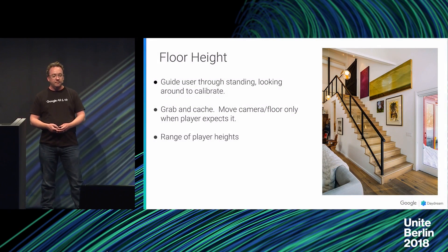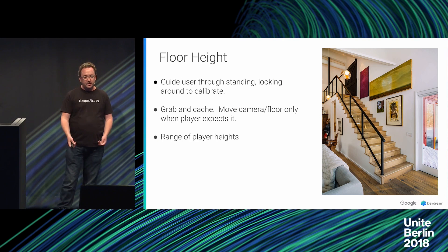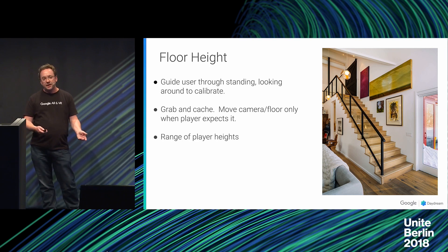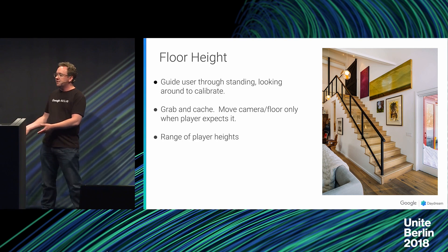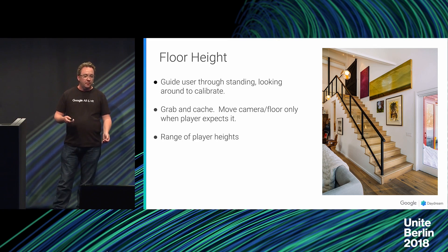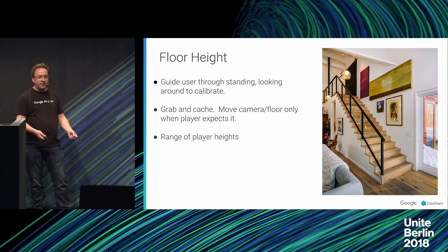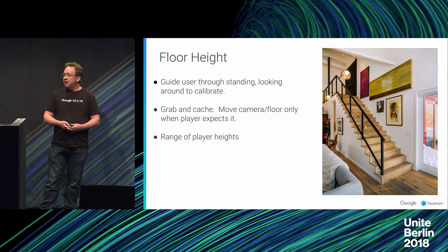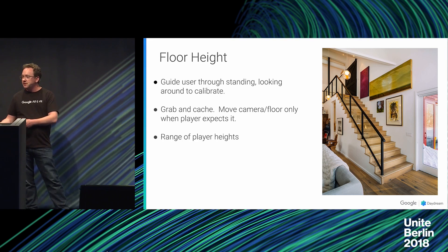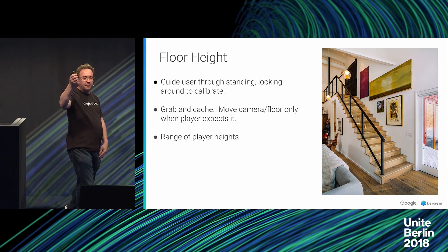If your game uses floor height, it's recommended that you guide users through a brief calibration exercise — first informing the user about the need to know the floor height, then guiding them to stand and look around their environment so the device can get to know it. Apply floor height at known points when the user might expect it to change, then cache it and don't change it continuously. Good moments to update include the end of an exercise, a recentering operation, or between scenes. Also be sure to account for a range of player heights for interactions like reaching up to grab things.